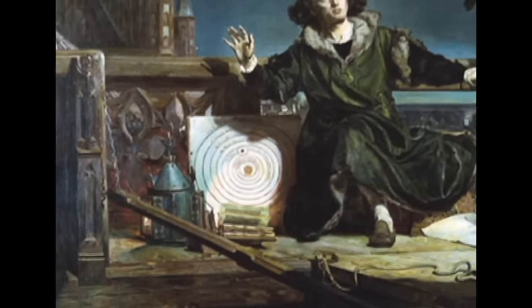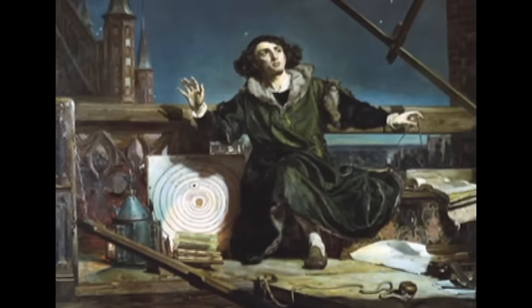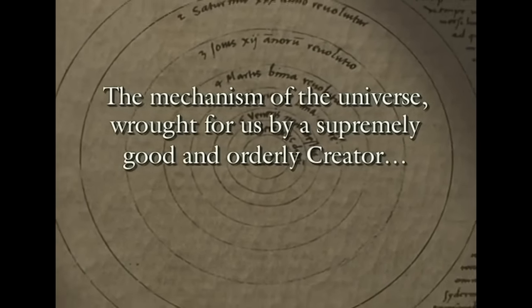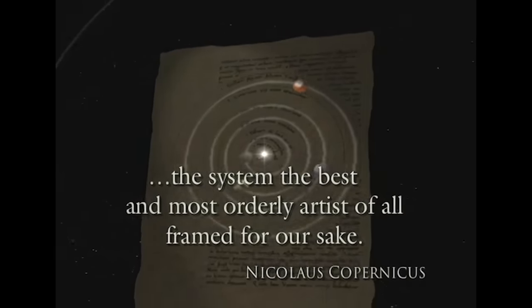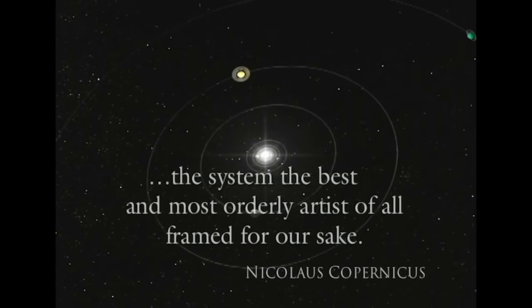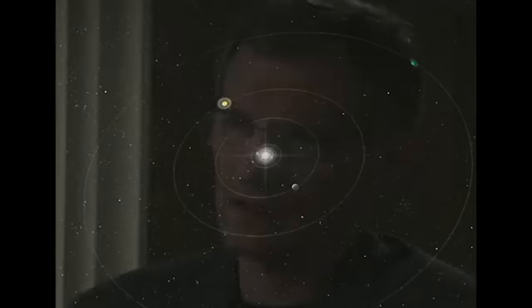In his search for a more elegant description of the solar system Nicholas Copernicus was motivated by his desire to comprehend what he called the mechanism of the universe wrought for us by a supremely good and orderly creator. The system the best and most orderly artist of all framed for our sake. And so he imagined this analogy of a workman a craftsman making something that worked well and was beautiful. And that analogy wasn't one of his conclusions that analogy was one of his assumptions.